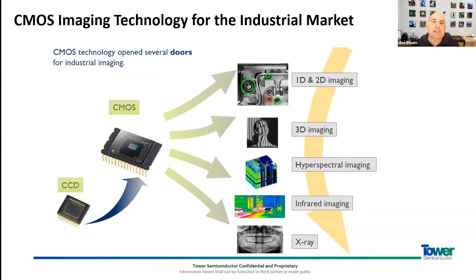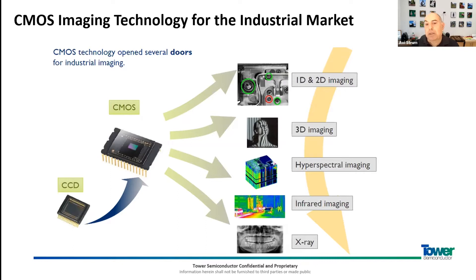If we look at the CMOS imaging technology market, it has almost completely replaced the old CCD technology. CCD technology is responsible today for about 1% of image sensors worldwide, so CMOS became the dominant technology for imaging. In the industrial market specifically, we are talking about 1D and 2D imaging, 3D imaging, hyper-spectral imaging, infrared imaging, and x-ray.